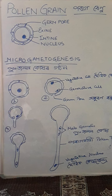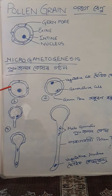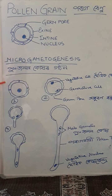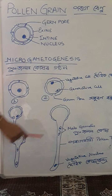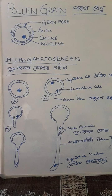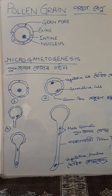This is the whole process of male gamete formation. We have now completed the process of microgametogenesis. When microgametogenesis is complete, the male gametes are ready for fertilization. The next class will cover female gametogenesis.